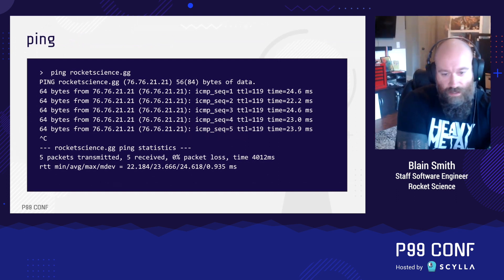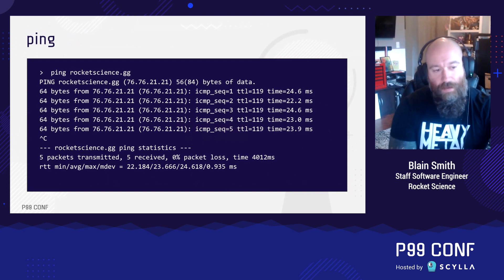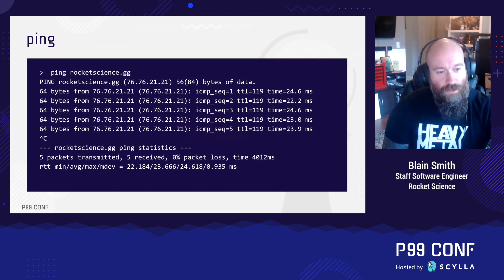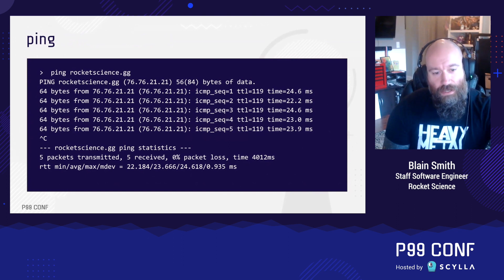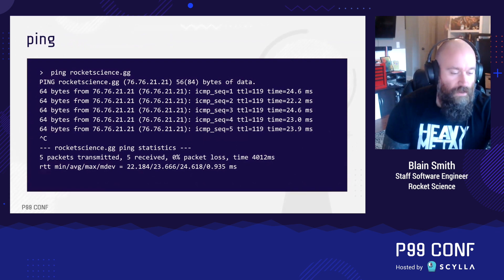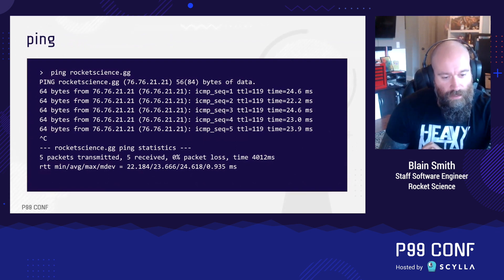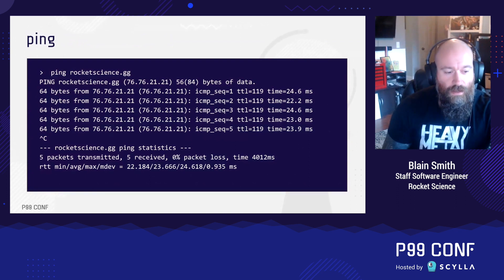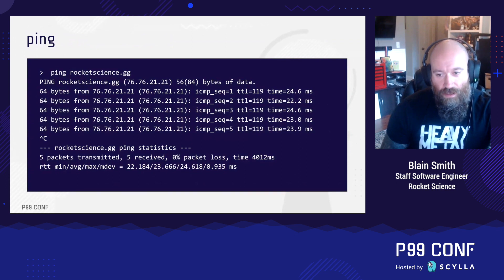An example everyone has used is the ping program. If we ping a certain location on the internet, we can measure the time it takes for a packet to go from our machine out to that destination. And then once we cancel this, we can see how many packets were transmitted, how many were lost, and what the total time was — including standard deviation and averages across the latency.